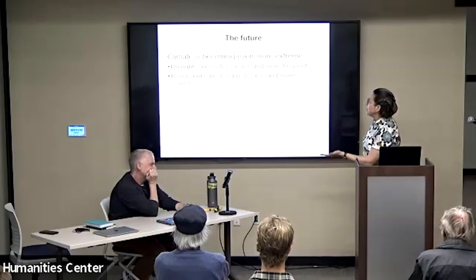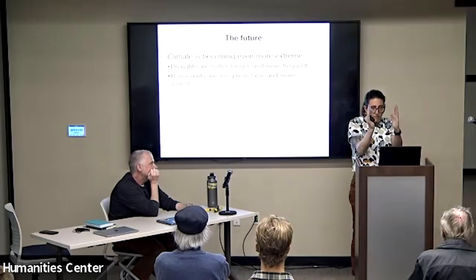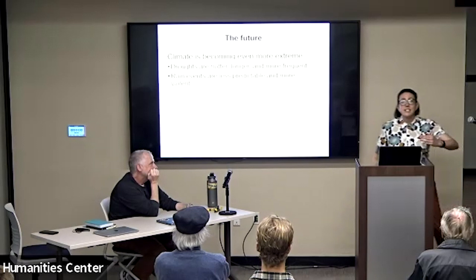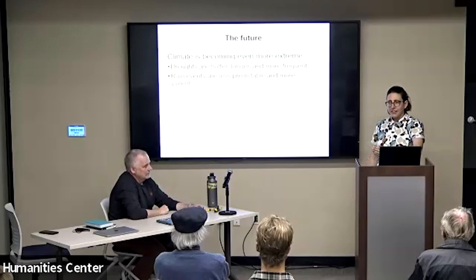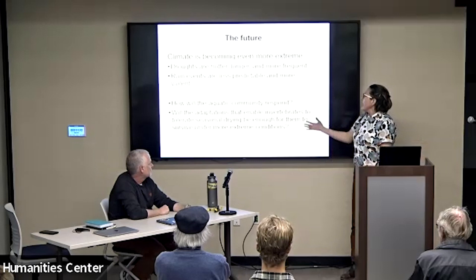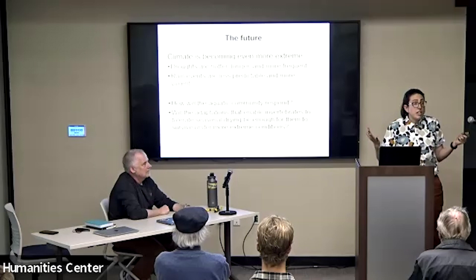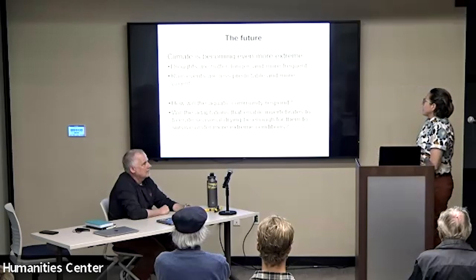The motivation for my research is that with climate change, droughts are hotter, longer, and more frequent; rain events are less predictable and more violent — a lot of rain falling in a short period of time. That's problematic for aquatic organisms with synchronized life histories that rely on predictable timing. My questions are: will these amazing adaptations allow invertebrates to tolerate these new, more extreme conditions? Some folks think desert aquatic taxa are really hardy and will be fine, but we don't know that. That's what my research program is trying to address.